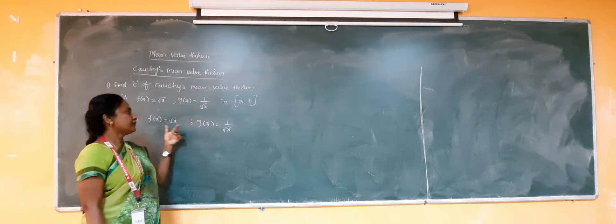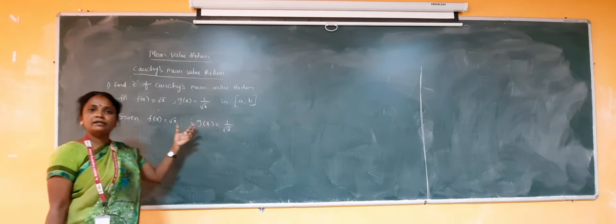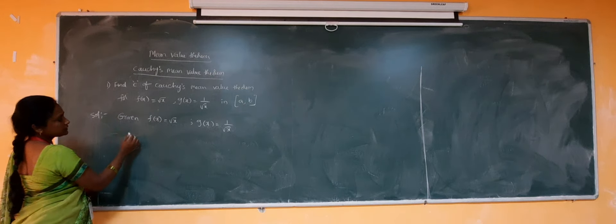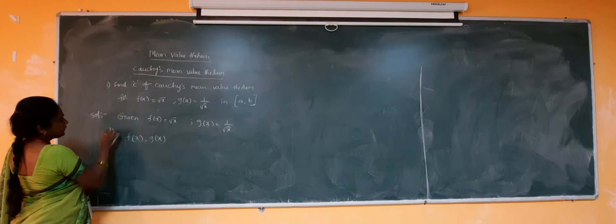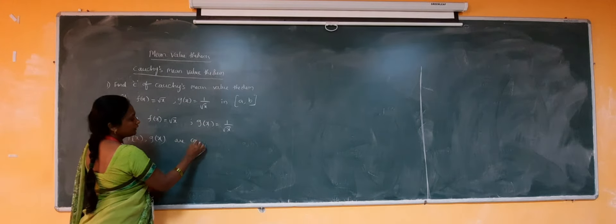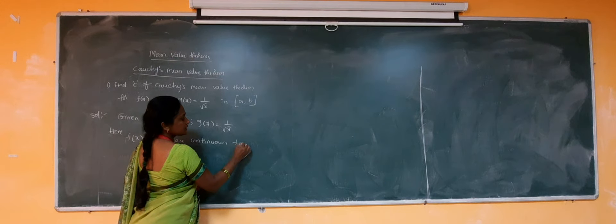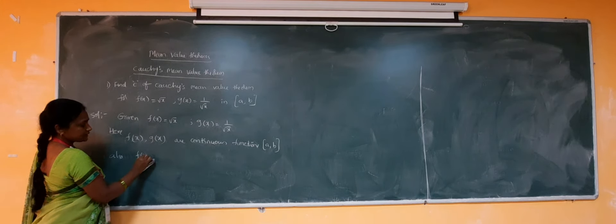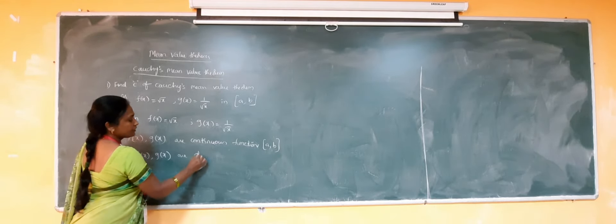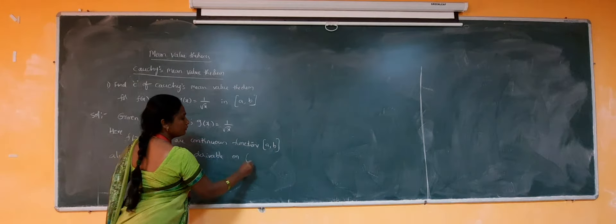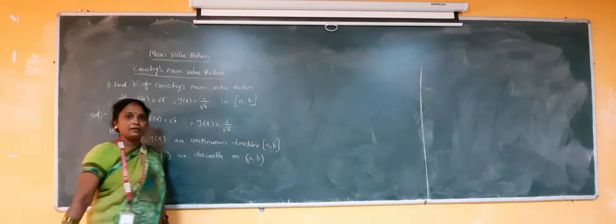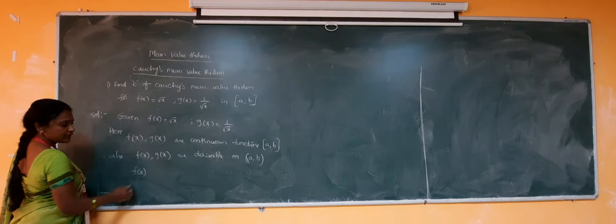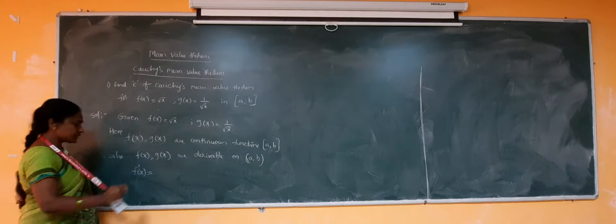Obviously, F and G are continuous functions and are derivable on the given interval. Therefore, F(x) and G(x) are continuous on closed interval [A, B]. Also, F and G are derivable on open interval (A, B). So the two conditions are satisfied. Now I am going to find F'(x) and G'(x).